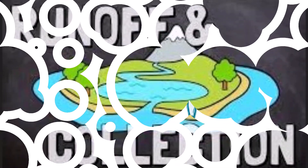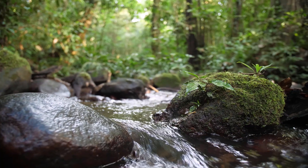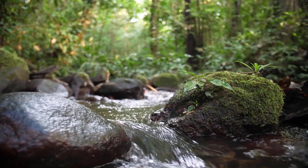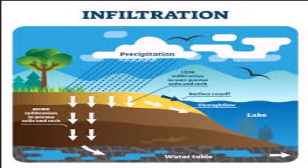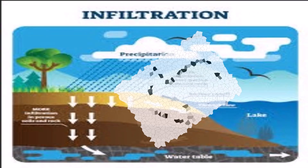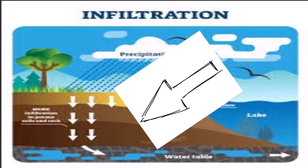Some of the water that doesn't get absorbed by plants may follow two paths. Runoff occurs when water flows over the land into rivers, lakes, and oceans. The other path is infiltration, which happens when water seeps into the ground, replenishing groundwater supplies.